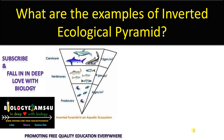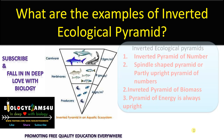Hi friends, once again back to biologyexams4u.com. Today the topic of our discussion is: what are the examples of inverted ecological pyramid — often a very frequent question in many exams of biological sciences.